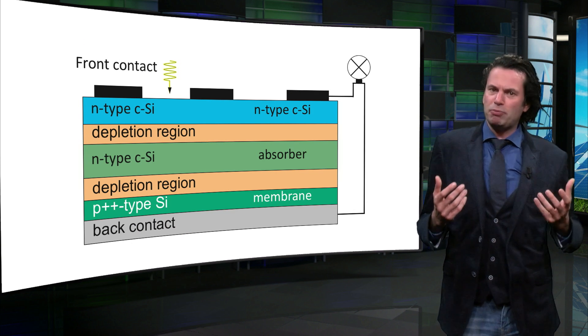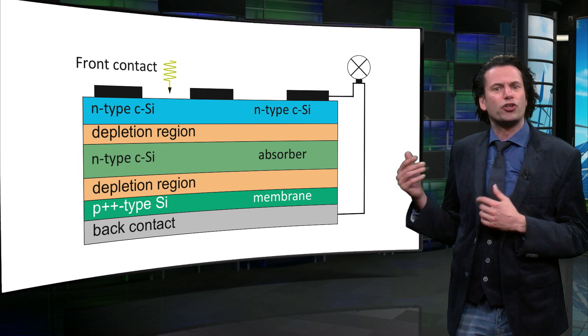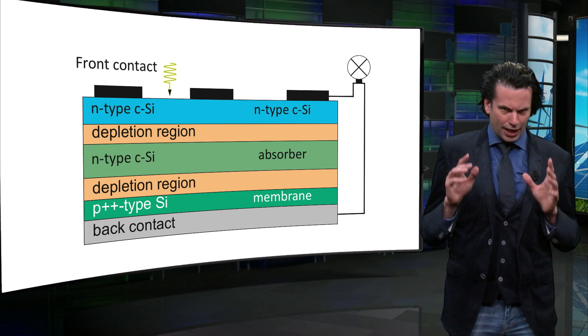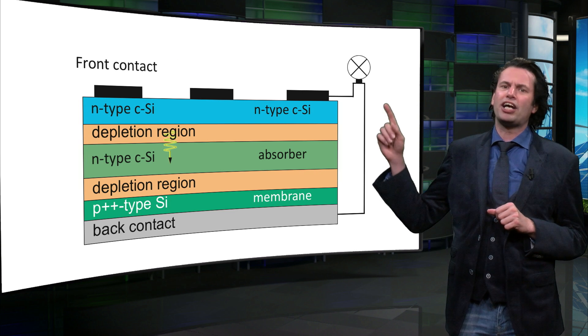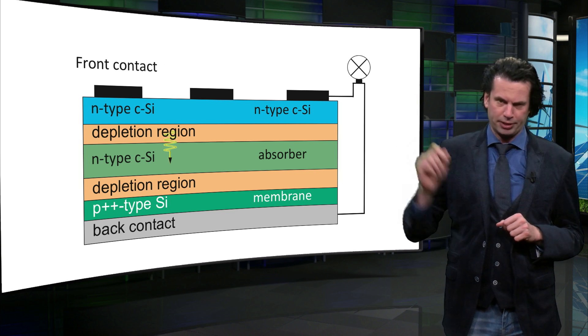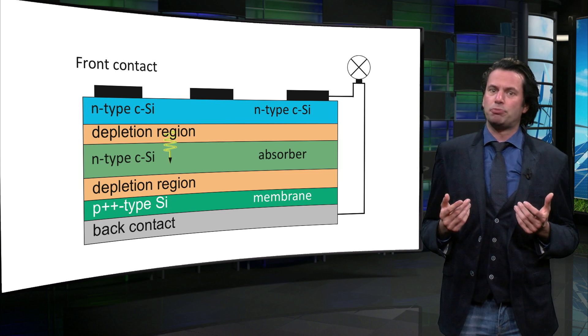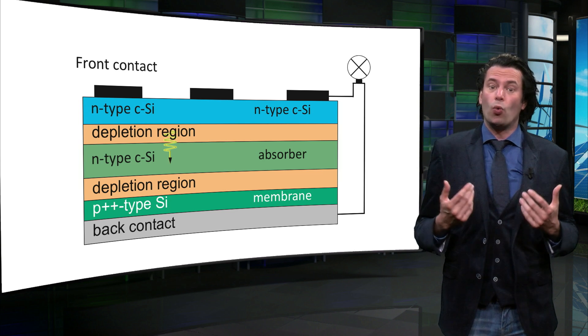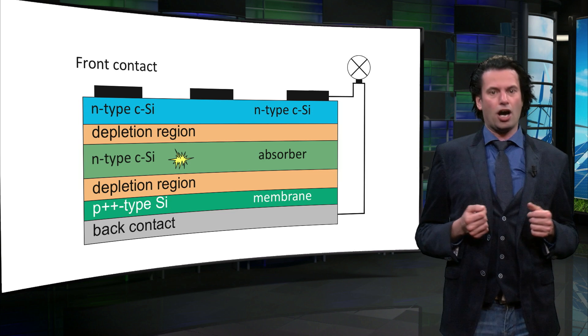Here we see the same structure, but then in a cross-sectional view. The light enters the solar cell from the front side, in this illustration that is the top side. The light is transmitted into the absorber layer where its energy is absorbed.